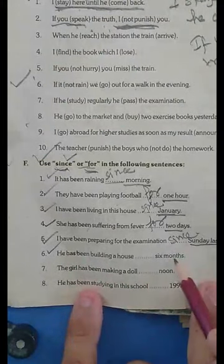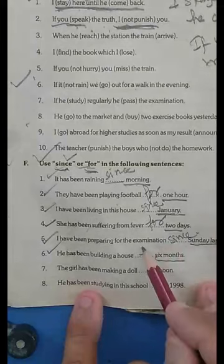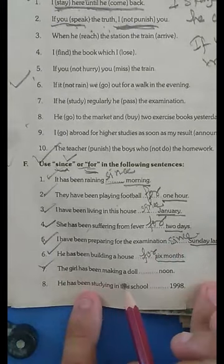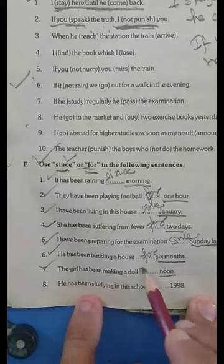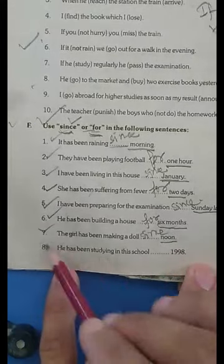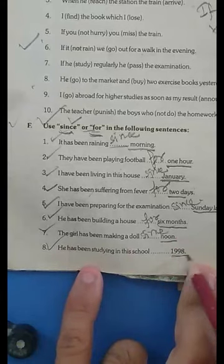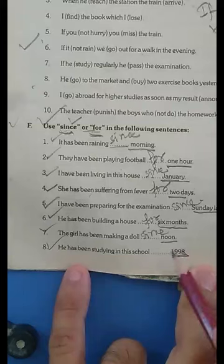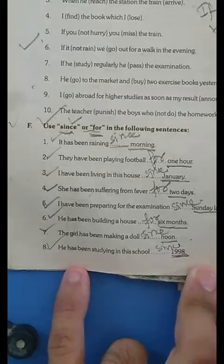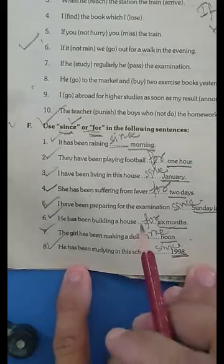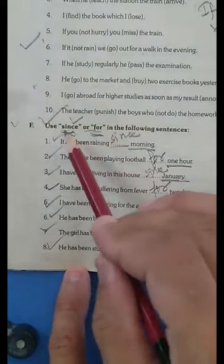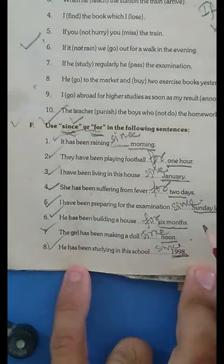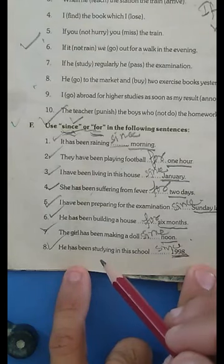Number six: 'He has been building a house for six months.' Six months is a longer period, so we use for. Number seven: 'The girl has been making a doll since noon.' Noon is an exact time. Number eight: 'He has been studying in this school since 1998.' 1998 is an exact year. So my dear students, here we understood that the exact date or time uses since, and I think you have clarified and comprehended the difference between since and for.